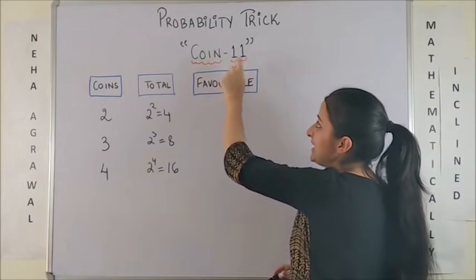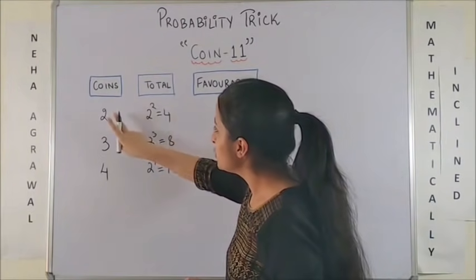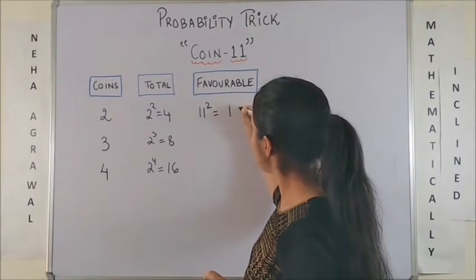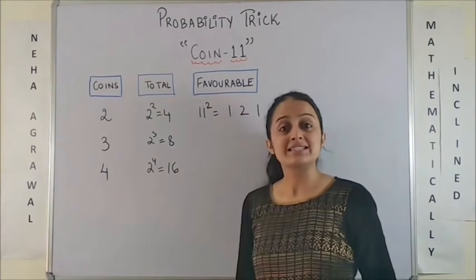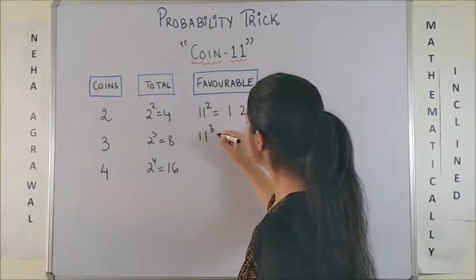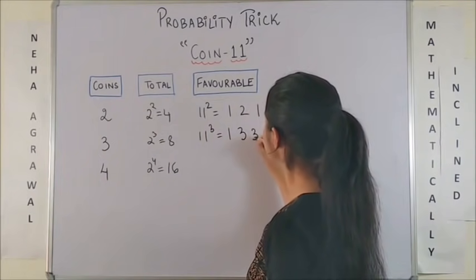So, why am I saying 11? Now, when there are 2 coins, the favourable outcomes would be 11 square which are 1, 2 and 1. Similarly, when 3 coins are tossed, we say it is 11 cube which is 1, 3, 3, 1.